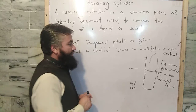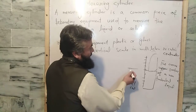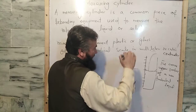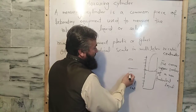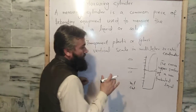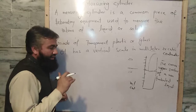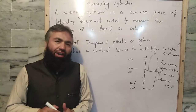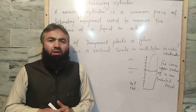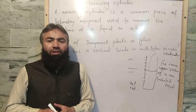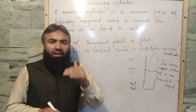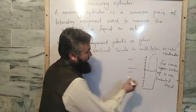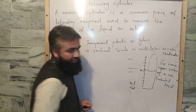Another important point: if we observe it above the eye level or below the eye level, then our observation will not be accurate. So these are the uses of the measuring cylinder. Suppose the reading is 30 milliliters — that is the volume of the liquid.